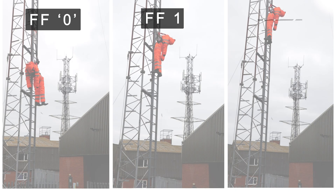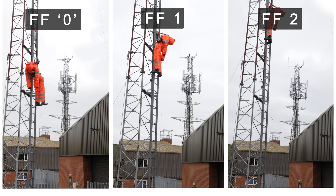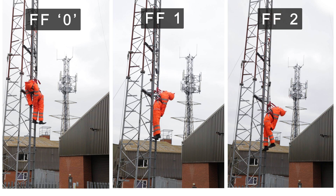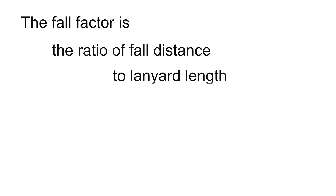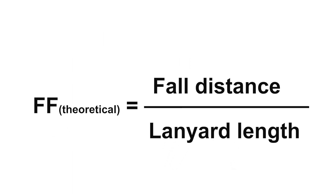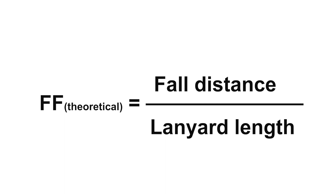Fall factors help us identify the best anchor points and understand clearance distances. They are a theoretical measurement of the severity of a fall — in other words, the higher the number, the potentially more severe the fall. The basic calculation is: fall distance divided by lanyard length equals fall factor.